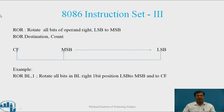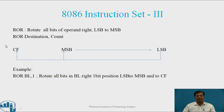Next is ROR — rotate all bits of operand right, with LSB content copied to MSB. The syntax is: ROR destination, count. Bits rotate right continuously; the LSB is moved to the MSB position and also to the carry flag. Example: ROR BL, 1 — rotates all bits in BL right one bit position, LSB to MSB and to carry flag.